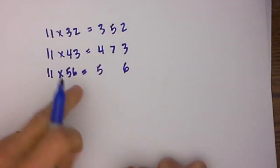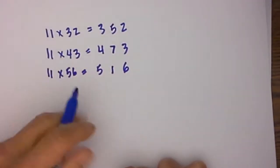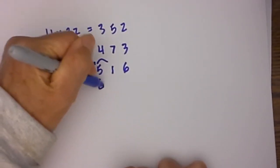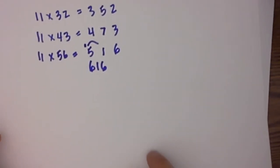I will spread the two digits out. 5 plus 6 is 11. Instead of writing the 11, you just write 1. Then carry the 10 over, so 5 plus 1 is 6. So the final answer becomes 616.